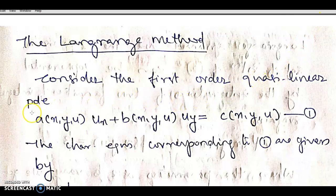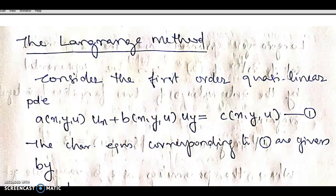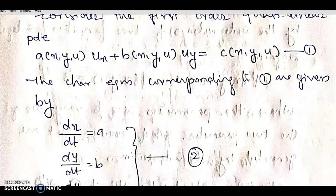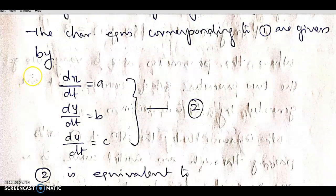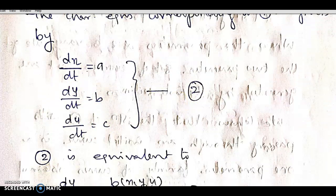We consider first-order quasi-linear equations of the form A(x,y,u)·u_x + B(x,y,u)·u_y = C(x,y,u), which we label as equation number 1. The characteristic equations are: dx/dt = A, dy/dt = B, and du/dt = C, labeled as equation number 2.